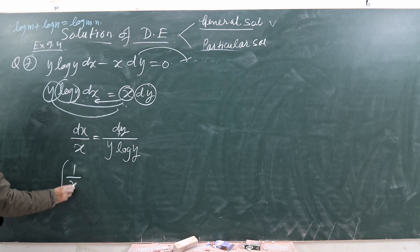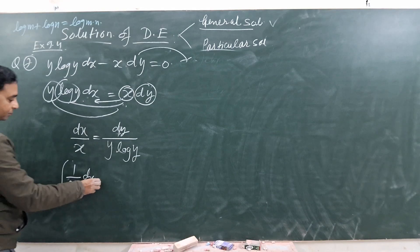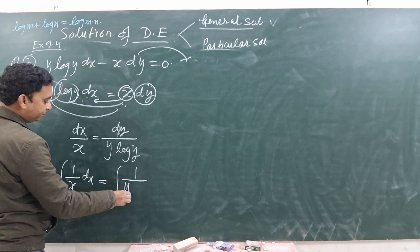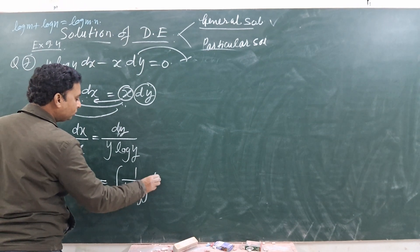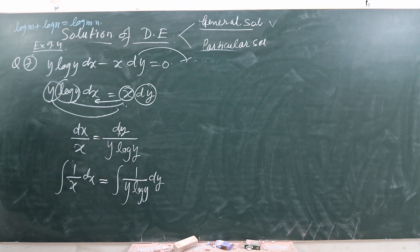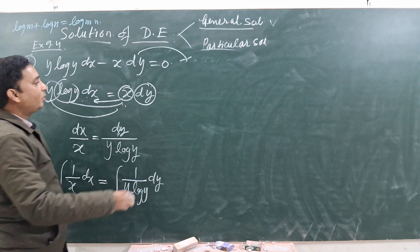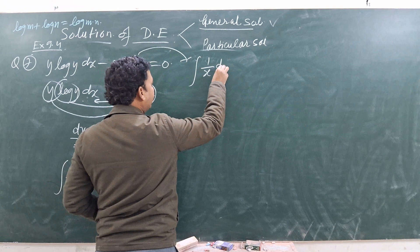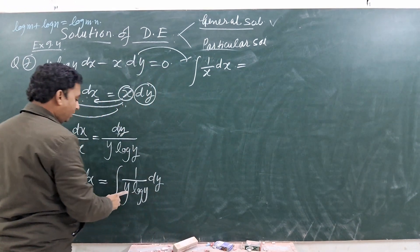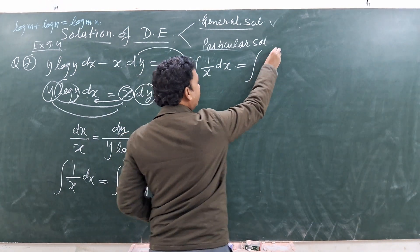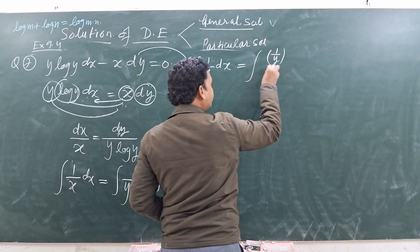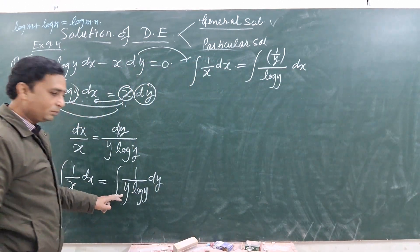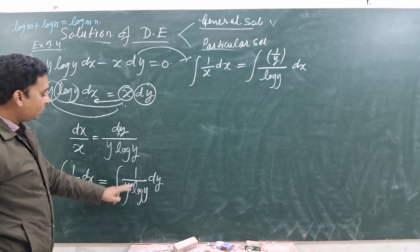Left side can be written as 1/x dx. Right side can be written as 1/(y log y) dy. Note carefully: 1/(y log y) can also be written as (1/y)/(log y) — both are the same form.